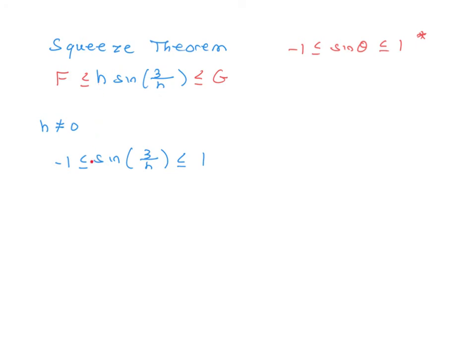I want an h here. So what you could do is multiply through this inequality by h. The only issue is that h can sometimes be negative if we're approaching 0, and a negative will flip the direction of the inequalities. So to fix this, I'm going to multiply through by the absolute value of h, which is always positive. Here's what we get. Negative the absolute value of h is less than or equal to the absolute value of h times sine of 3 over h, and that's less than or equal to positive the absolute value of h.